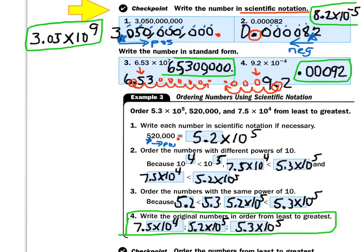For number 2, I wrote the number they gave me. With my red I circled the decimal, and with my blue I placed a star to create a number between $1 and $9.99. Standing on the star and shooting the arrow — this time it goes in the negative direction. I counted 1, 2, 3, 4, 5 numbers between the star and the decimal. So that gave me 8.2 times 10 to the negative 5th power.